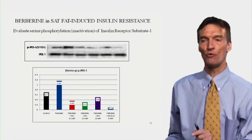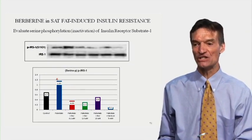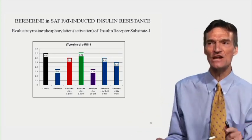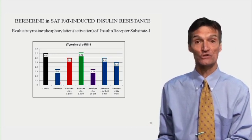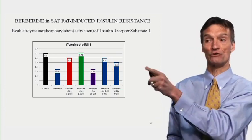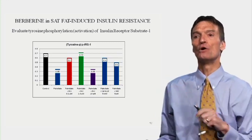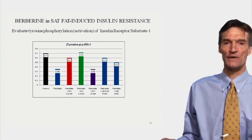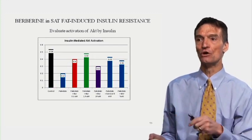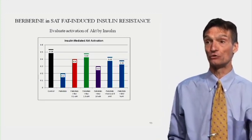Serine phosphorylation — inactivation of the insulin receptor substrate — increases with saturated fatty acids and is prevented by berberine or aspirin. Beneficial tyrosine phosphorylation — activation of insulin receptor substrate 1 — is blocked by saturated fatty acids and ameliorated by berberine, aspirin, and by BAY, an experimental substance that knocks out nuclear factor kappa-beta. If we knock out Queen Jadis and nuclear factor kappa-beta — with BAY, aspirin, or berberine — we blunt insulin insensitivity due to any source of inflammation: lipopolysaccharide or high levels of saturated fatty acids. Insulin-mediated AKT activation and normal insulin signaling is blunted by saturated fatty acids and ameliorated by berberine, aspirin, or by knocking out nuclear factor kappa-beta.